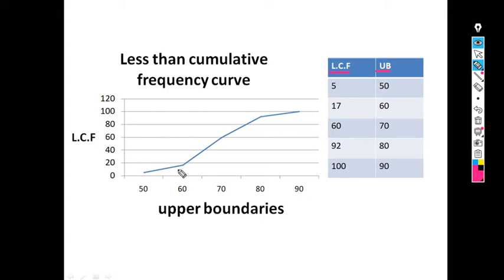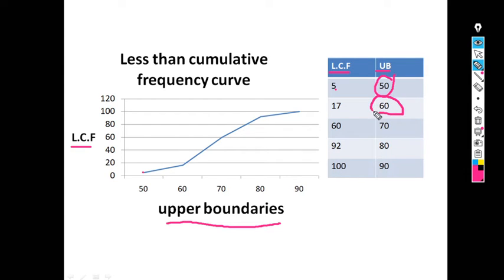On the x-axis, we take upper boundaries and on the y-axis, we take LCF. For upper boundary 50, LCF is 5 — plot one point there. For 60, LCF is 17. For 70, it is 60. For upper boundary 80, it is 92. And for 90, it is 100. Give one point for each and join these points by straight lines to get the LCF curve. Always remember: the less than cumulative frequency curve is always in increasing order.